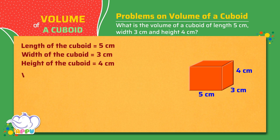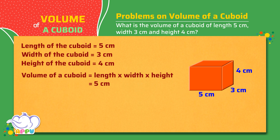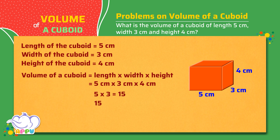We know that the volume of a cuboid equals length times width times height, which is 5 cm times 3 cm times 4 cm. 5 times 3 equals 15, and 15 times 4 equals 60. So the volume of the cuboid equals 60 cubic centimeters.